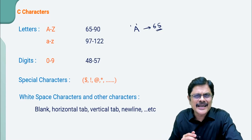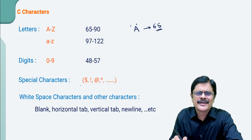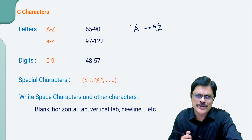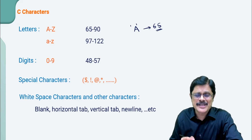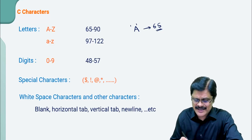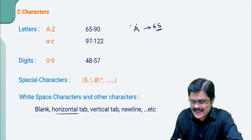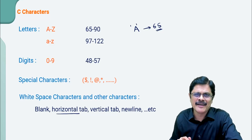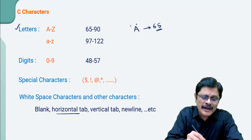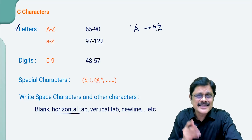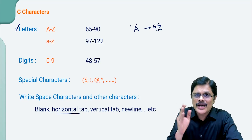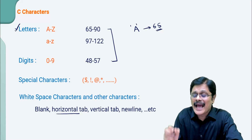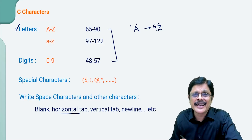Not only letters and digits — we also have special characters, like almost all the characters available on your keyboard. There are also white space characters like blank, horizontal tab, vertical tab, new line characters, etc. We should definitely know the letters capital A to Z, small a to z, and digits 0 to 9 together with their ASCII values. It is very, very important.